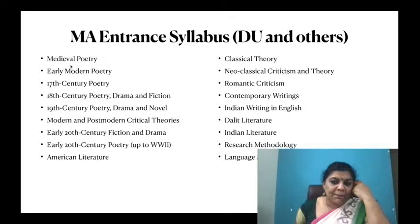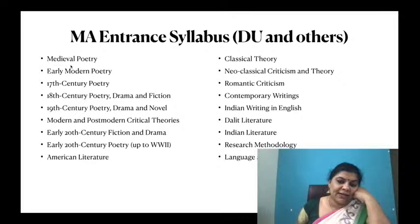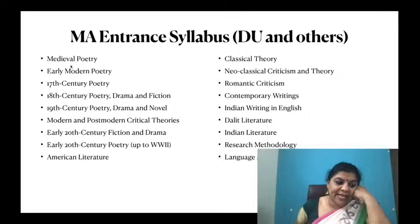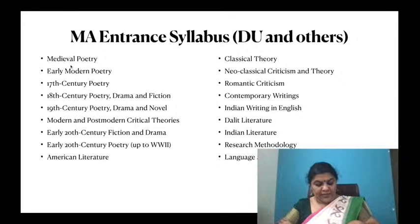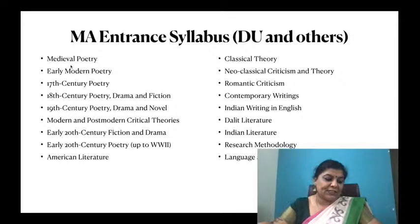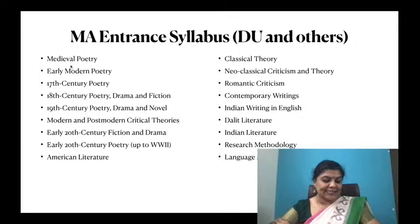Balnibarbi, Luggnagg, and Glubbdubdrib — these are places in Book Three of Gulliver's Travels. Joseph Addison and Richard Steele were members of which club? They were members of the Kit-Kat Club.